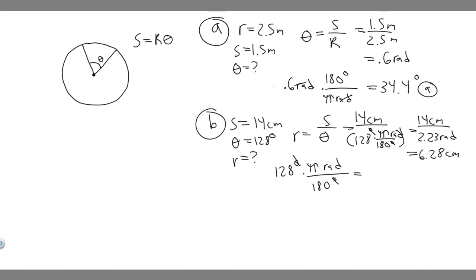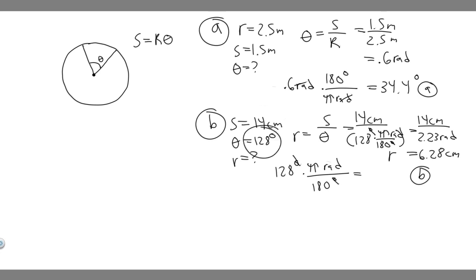Rounding those values, we get approximately 6.28 centimeters. That is the radius of the circle for Part B, with arc length 14 centimeters and angle 128 degrees.